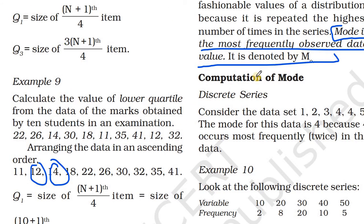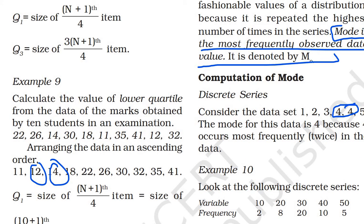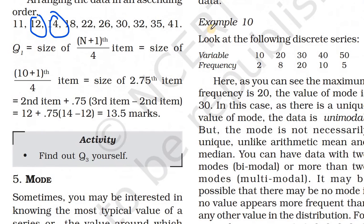Here is a question on discrete series: find the mode. Consider the data 1, 2, 3, 4, 4, 5. The mode for this data is 4, because 4 is the most repeating — it frequently occurs 2 times. That is why we take mode as 4.